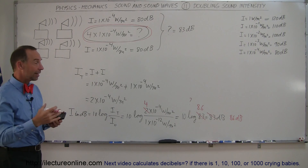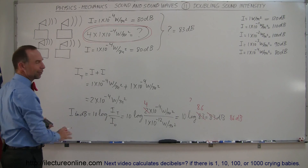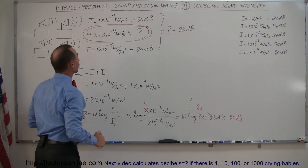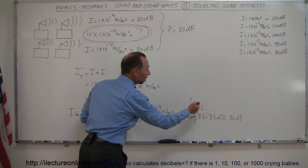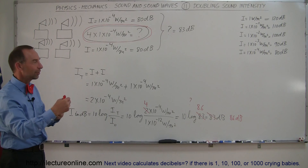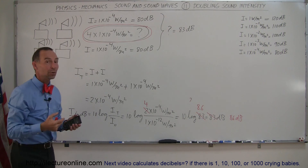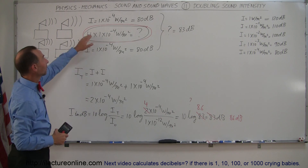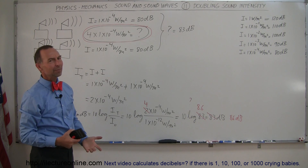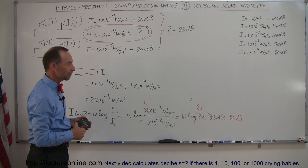Now you can see that anytime you double the sound intensity, you simply add 3 decibels. What if we had 8 of these? The total intensity would be 8 times 10 to the minus 4 watts per square meter, and you would simply add another 3 decibels — that would be 89 decibels, and so forth. It's not just doubling the decibels; it's adding 3 decibels each time you double the intensity. What about half? If you had one that puts out half as much, you would subtract 3 decibels — so 1 times 10 to the minus 4 divided by 2 would be 77 decibels. Hopefully that makes it easier to work with the decibel scale, and in the next video we'll test that knowledge.